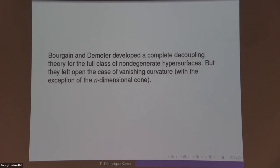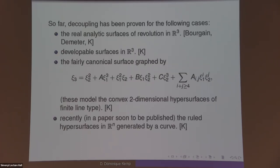What's left is the case of vanishing curvature, with the exception of the n-dimensional cone which Bourgain and Demeter took care of. This is where my research has been focused. Initially, in joint work with Bourgain and Demeter, we proved decoupling for the real analytic surfaces of revolution in R³. Then the decoupling theory of developable surfaces in R³ was completed. The third surface may seem strange, but it models the convex two-dimensional hypersurfaces of finite line type based on a decomposition provided by Schultz. And recently, the ruled hypersurfaces in R^n generated by curves also have an established L² decoupling theory.